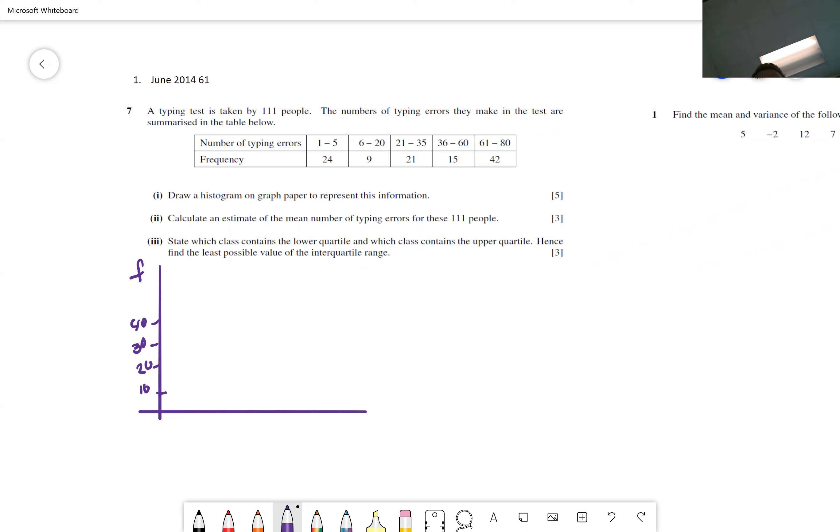A lot of you went for the first class, one through five. The problem is when you do the next one, six through 20, there's a gap. If you do that, then you have to do zero through six, and then six through 21. You got to make sure you maintain the same width.